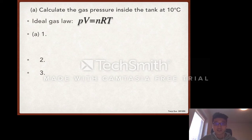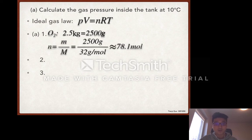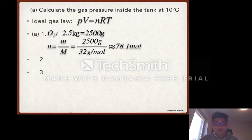Now we can answer this question in three steps. As the first step, we need to know how many moles of oxygen. 2.5 kg is 2500 grams. The molar mass of oxygen is 32 grams per mole. 2500 divided by 32 is about 78.1 moles.